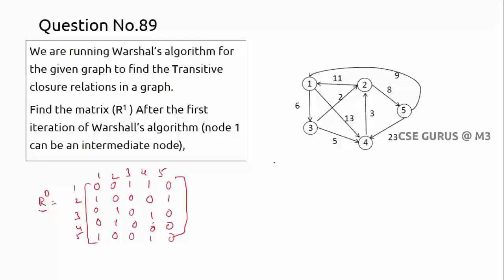The formula for finding the transitive closure is: R^k(i, j) = R^(k-1)(i, j) OR [R^(k-1)(i, k) AND R^(k-1)(k, j)]. You do iterations where k goes from 1 to the number of vertices. Either there is a direct path or a path via k. If anywhere you get 1, the answer is 1. If both are 0, there is no path.